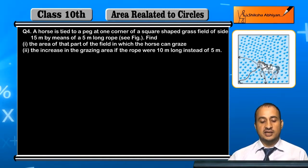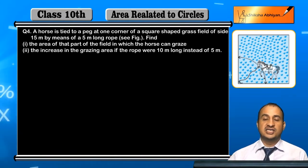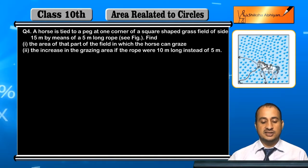Find the area of that part of the field in which the horse can graze. The second part is the increase in the grazing area if the rope was 10 meters long instead of 5 meters.